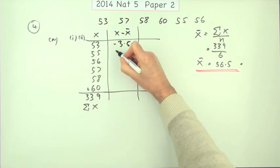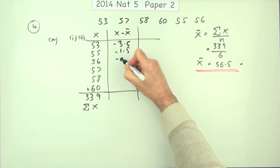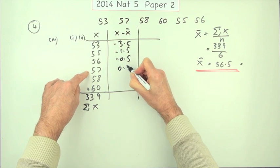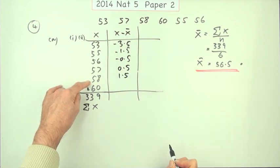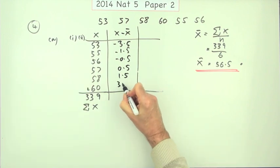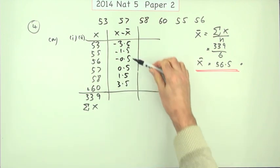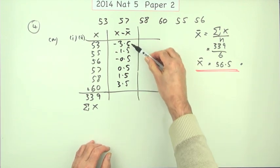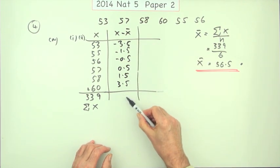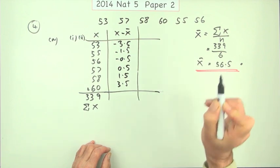56, that would be negative 0.5. Now we're moving up. That's just 0.5 above. That's 1.5 above. It's all balancing nicely. And that one's 3.5. A quick check. Even though this is completely symmetrical here. A quick check if you've got the mean correct is this column should add up to 0 if your mean is correct.